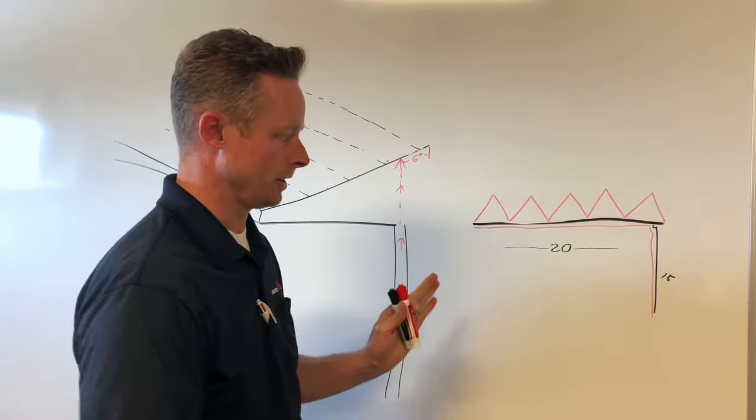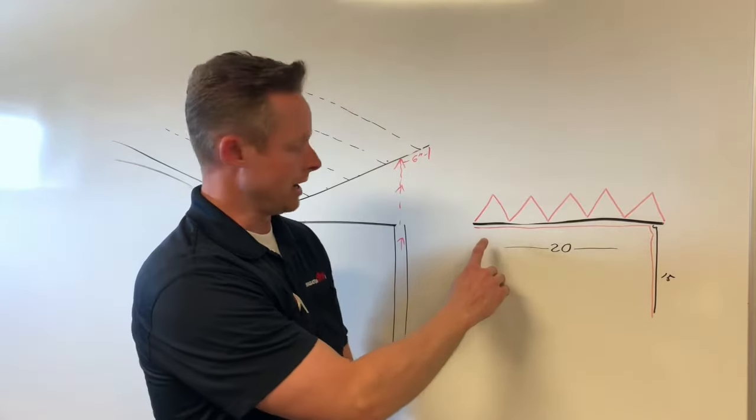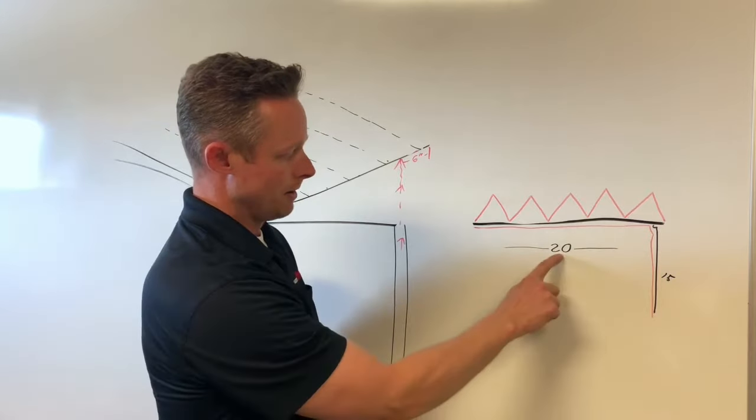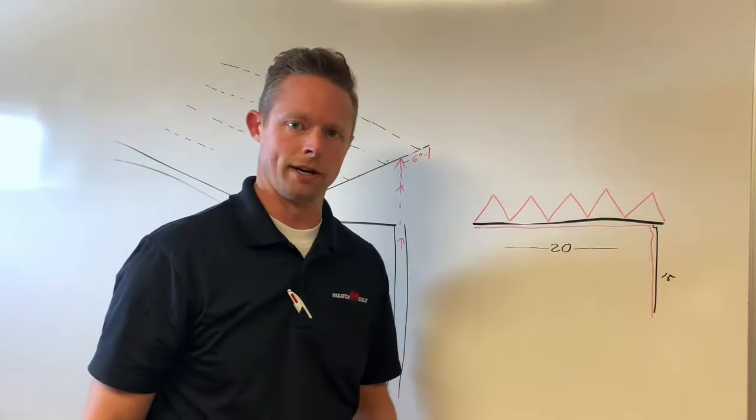So first off we're going to start with a basic roof line. Here I've drawn out a roof system as far as just a straight shot across the roof, figuring roughly 20 feet and a 15 foot downspout right here.